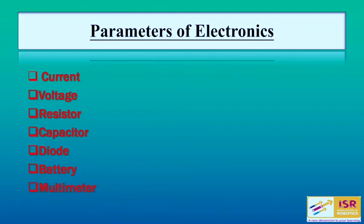First is parameters of electronics. We have various parameters in electronics such as current, voltage, resistor, capacitor, diode, battery, and multimeter. We will discuss all these parameters one by one.